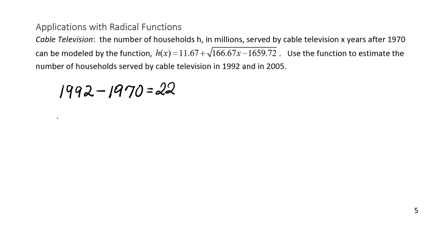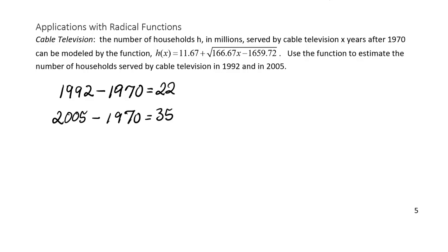And then if we want to know how many years have passed from 1970 to 2005, we take 2005 and subtract 1970 from it, and we should get 35 years. This is what we'll enter into the calculator.